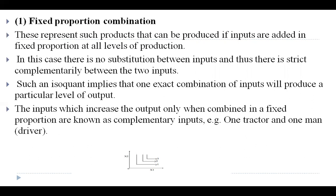In fixed proportion combination we observe a complementary relationship between two inputs. Such an isoquant implies that one exact combination of inputs will produce a particular level of output. The inputs which increase output only when combined in a fixed proportion are called complementary inputs. An example is one tractor and one driver.